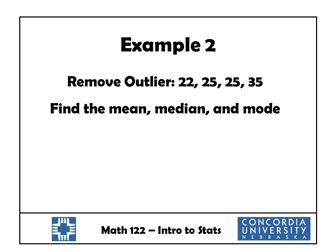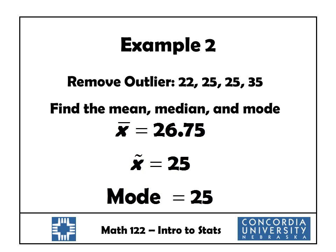Now let's see what happens when we remove the outlier from the data set. Go back to the calculator, delete 110 from the data list, and run 1VarStats again. The new mean is 26.75. The median is still 25 and the mode is still 25 — they don't change. However, the mean is quite a bit smaller. 26.75 is a much better representation of the data than 43.4, so that one outlier greatly affected the mean.